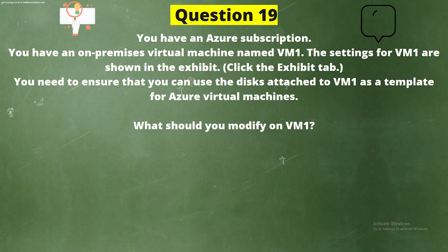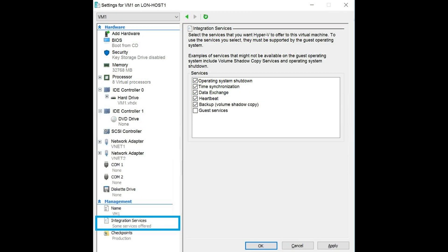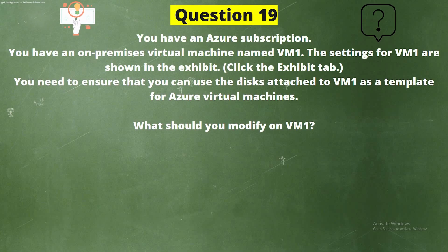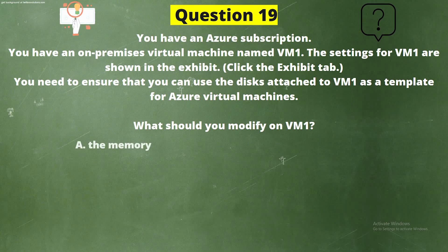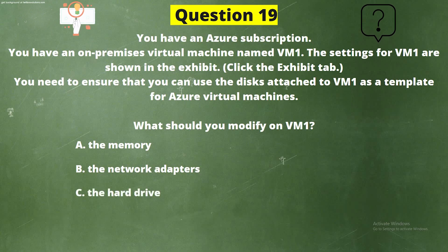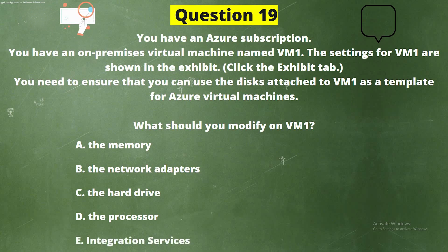Question 19. You have an Azure subscription and an on-premises virtual machine named VM1. You need to ensure that you can use the disk attached to VM1 as a template for Azure virtual machines. What should you modify on VM1? Options: A) the memory, B) the network adapters, C) the hard drive, D) the processor, E) integration services. The correct answer is Option C — the hard drive.